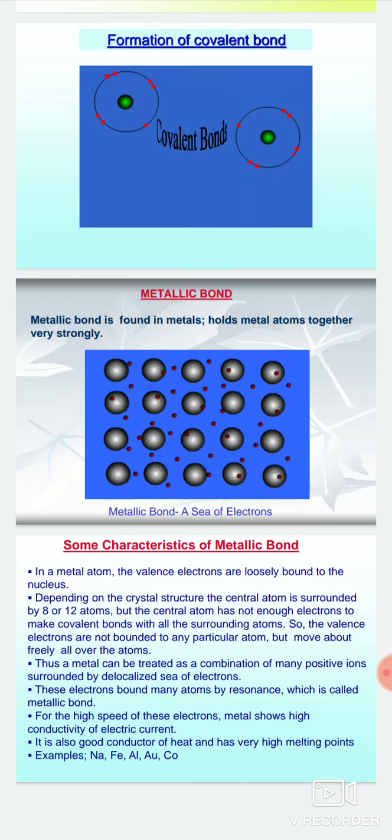For example, sodium, iron, aluminum, gold, copper, and cobalt. One of the most important characteristics is that metals are very good conductors of heat and have very high melting points.